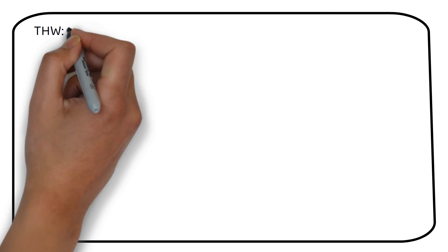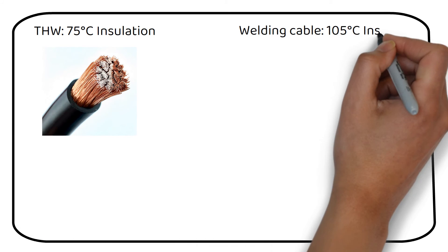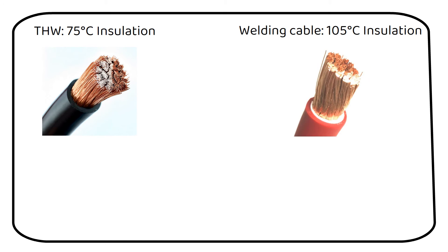If the current increases, we have to increase the diameter of the wire. If you have a wire with the same thickness, they can carry different currents because they have different isolation temperature. For example, 4 gauge THW wire with 75 degrees Celsius insulation can carry 85 amps, while 4 gauge 105 degrees Celsius welding wire can carry 150 amps. You have to choose your wire carefully and look at the temperature rating of the conductor.